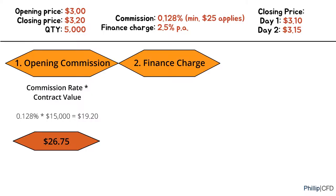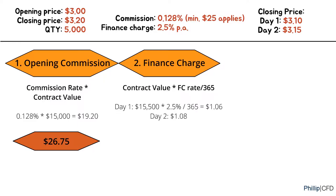Next, we calculate the Finance Charge. The formula used is contract value times Finance Charge Rate per annum, divided by 365. Given that the closing price is $3.10 on day 1, we use a contract value of $15,500 times 2.5% divided by 365, which gives us $1.06. Using the same formula for day 2, we get $1.08. Since you covered this position on day 3, Finance Charge is only applicable for the first two days.